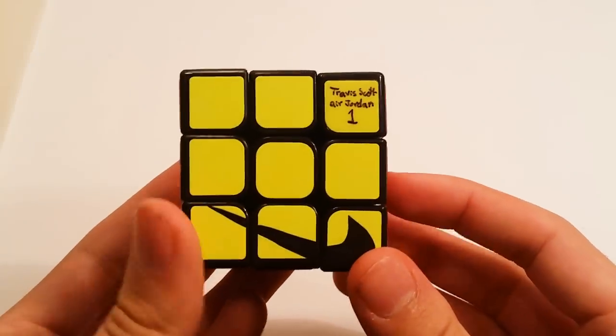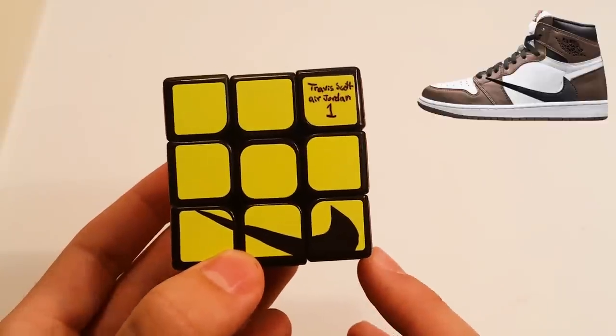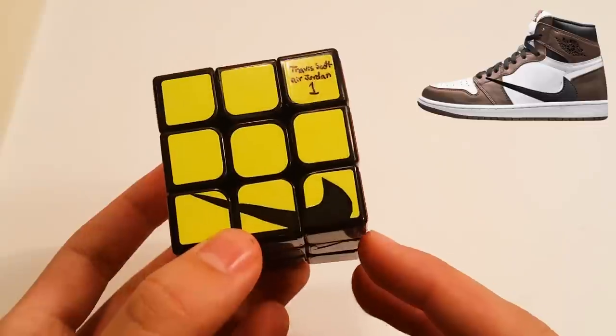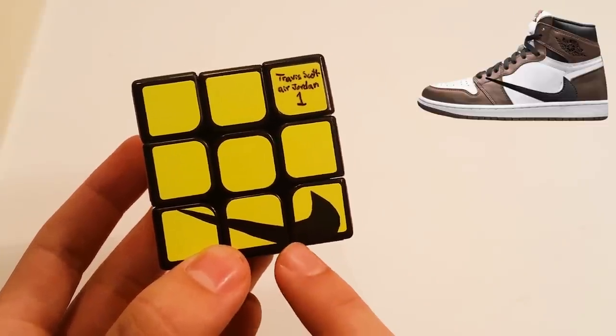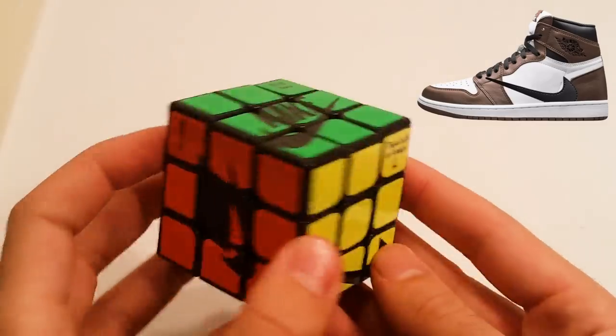And then, on the bottom here, we have a reverse swoosh on an unreleased shoe, the Travis Scott Air Jordan 1, which, like I said, I don't think is out yet. But I just really like how the reverse swoosh looks. And on the shoe, it's cut off on the bottom like this, so I decided to add it to the bottom of the face.